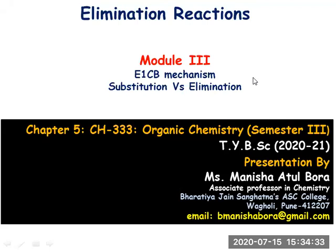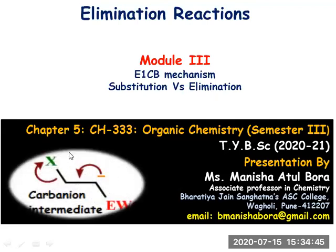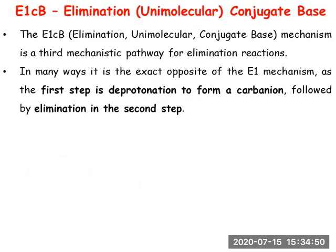We are back with elimination reactions, and this is module number three, in which we are supposed to study about the E1cB mechanism. We'll also be talking about substitution versus elimination reactions. E1cB stands for E for elimination, 1 for unimolecular, and CB stands for conjugate base. This reaction takes place through a conjugate base.